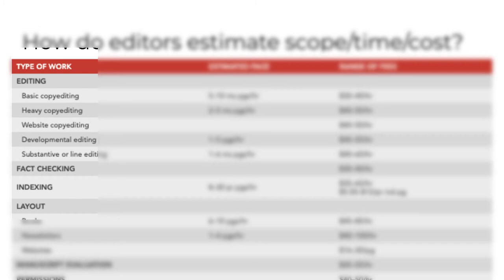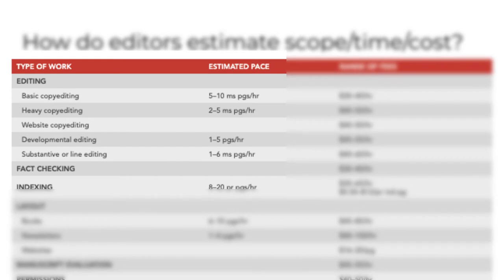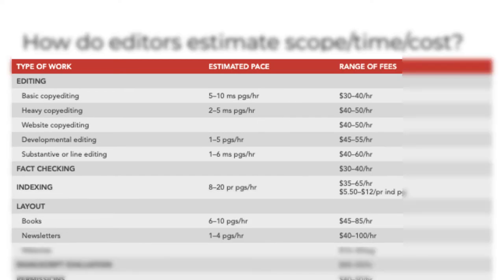There's heavy copy editing, developmental — what we've been calling structural. The second column represents time, with basic copy editing estimated to be the least time-consuming, and developmental editing the most, with heavy copy editing somewhere in the middle. Note that using pages per hour is one of the flaws in these estimates. The third column represents cost, with basic copy editing estimated at the lowest hourly fee, developmental the highest, and heavy in the middle.